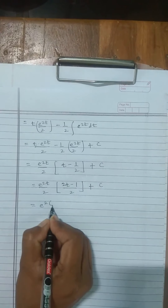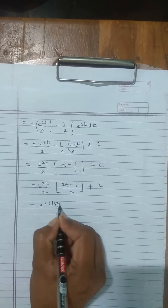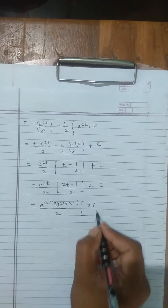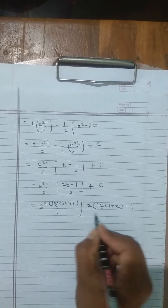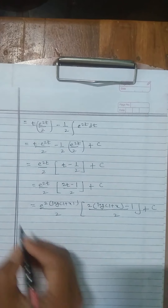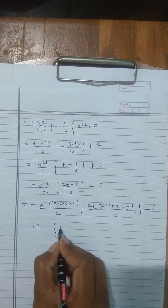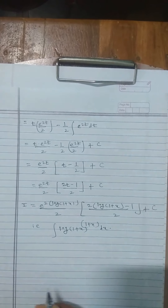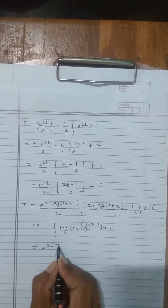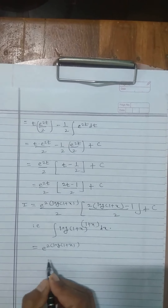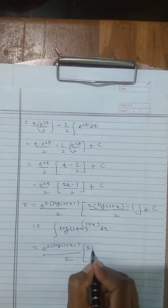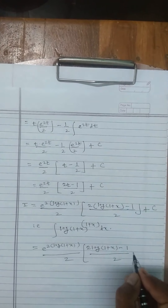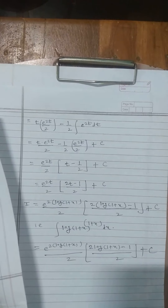Substituting back t = log(1 + x): the result is e^(2·log(1+x)) · (2·log(1+x) − 1) / 4 + C, which equals (1+x)² · (2·log(1+x) − 1) / 4 + C. That is, ∫log(1+x) · (1+x) dx = [(1+x)² · (2·log(1+x) − 1)] / 4 + C is the required integral.